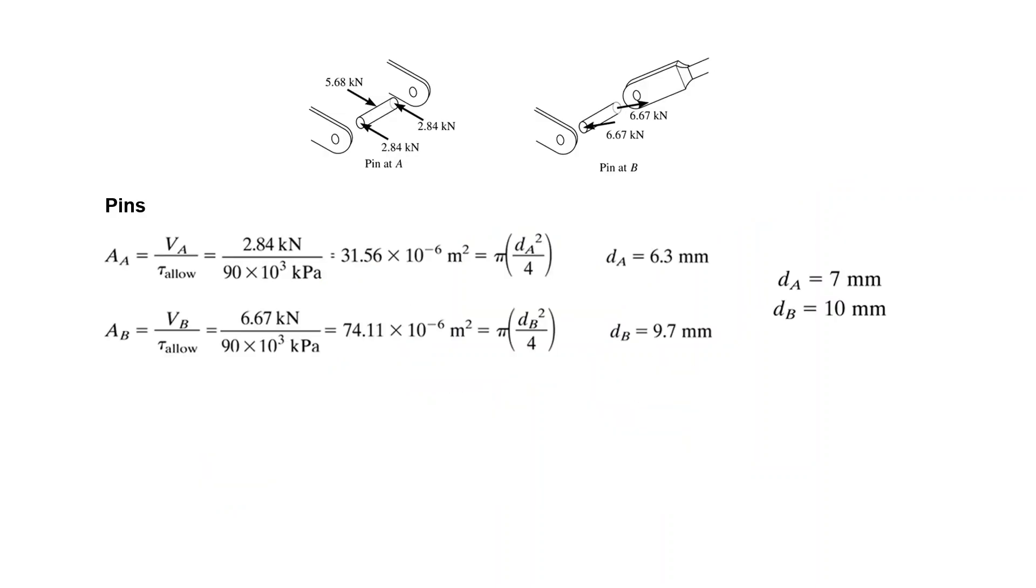The next step is to calculate the pin force. The force is 5.68 kN. It is in pin A, supported double sided, each side 2.84 kN. We know that the shear stress is given as V over A.